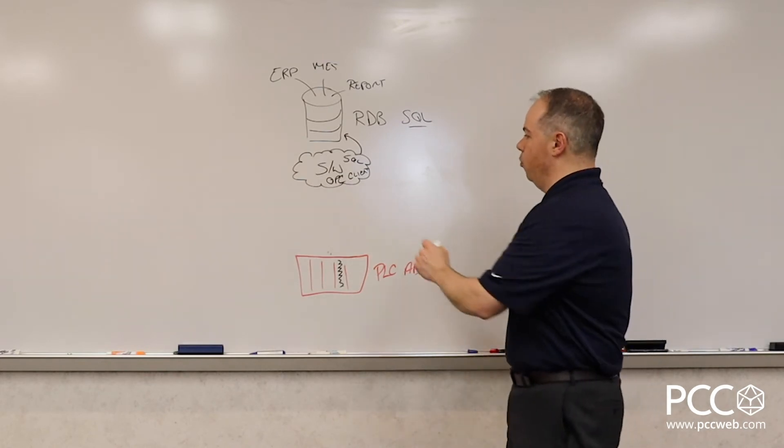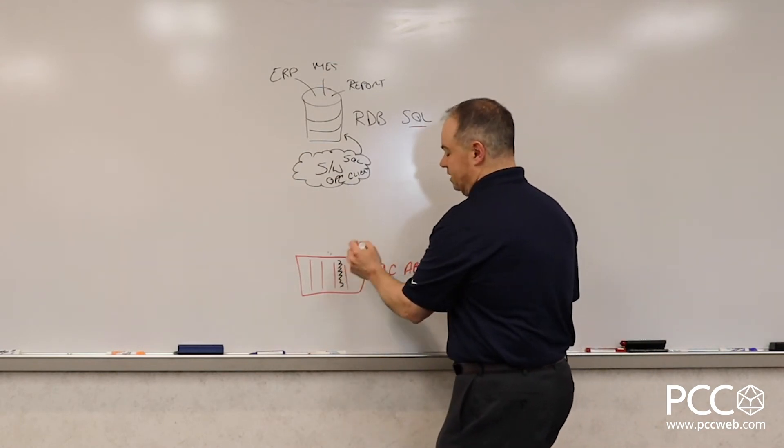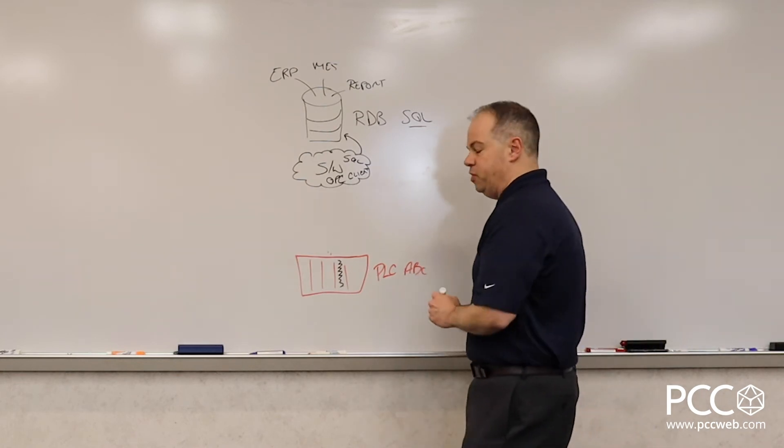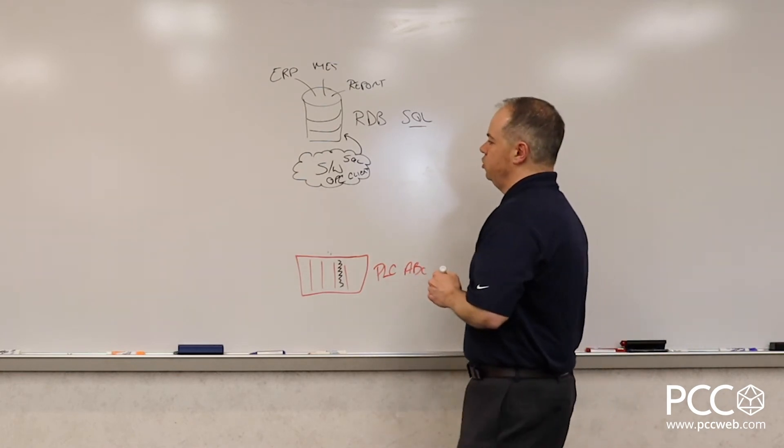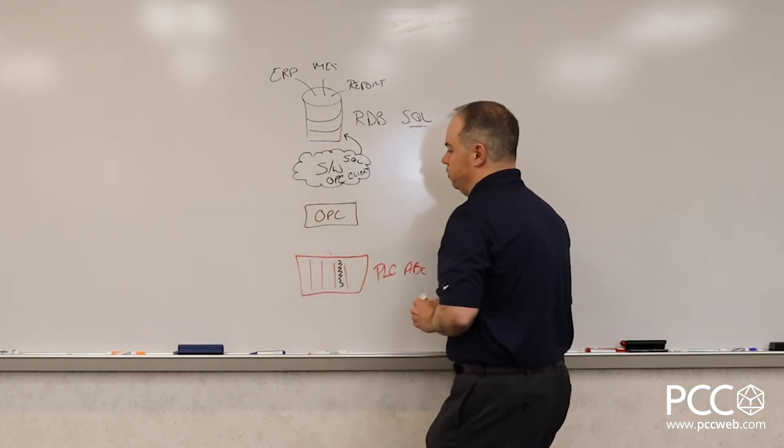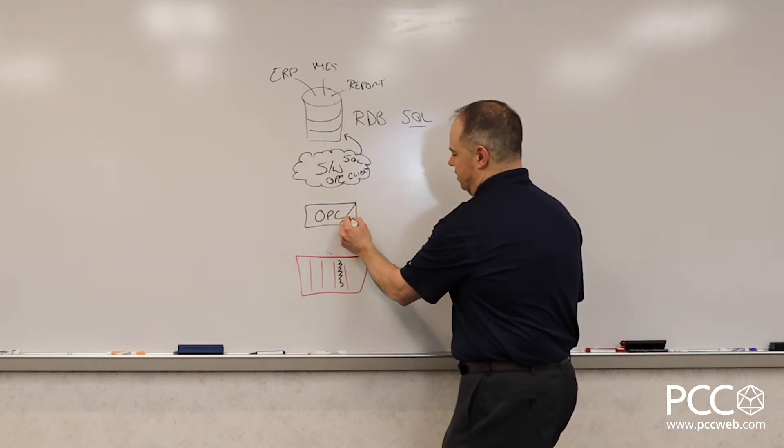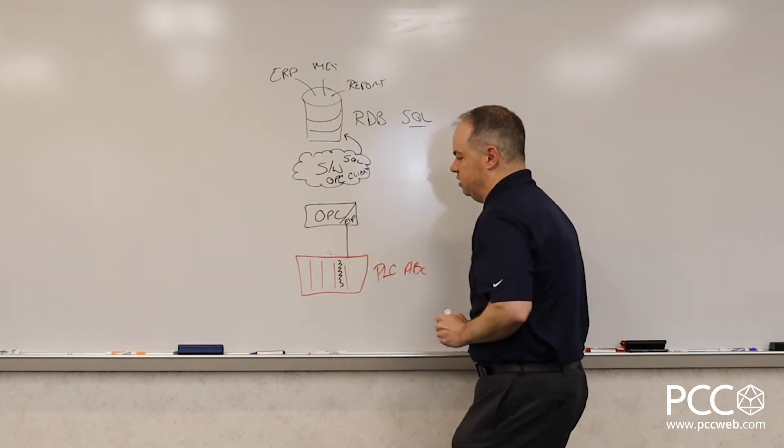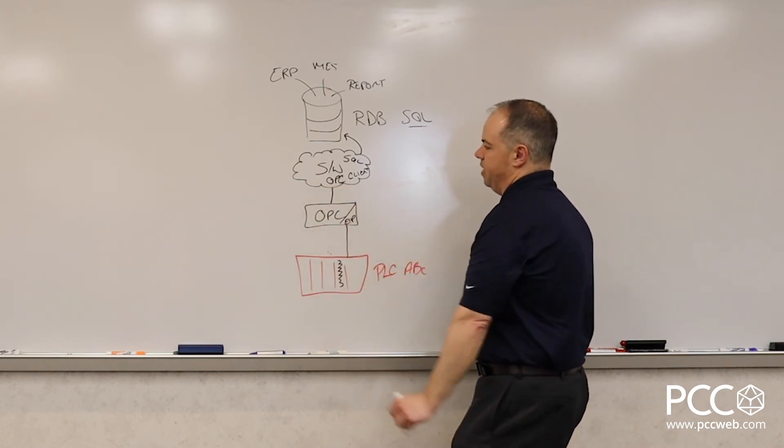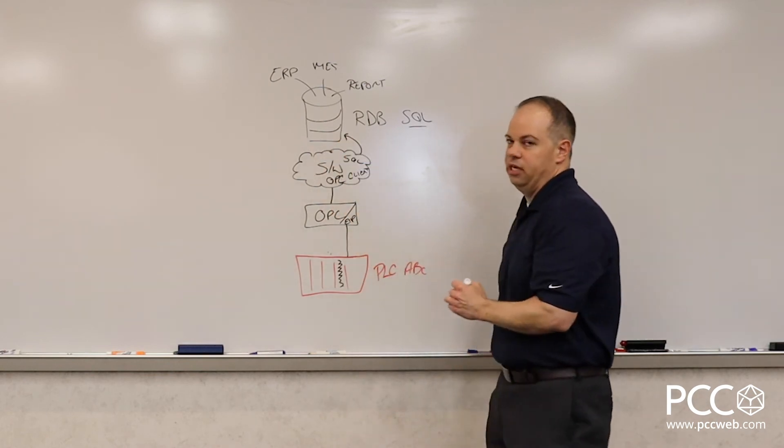That's good. OPC is an open method of communications, so that's a good thing. The trouble is again, my PLC ABC does not speak OPC by default. So now what I need to do is I need to add another piece of software in here, referred to as an OPC server. And now that OPC server has that driver to be able to speak to the PLC. It has the OPC server capabilities to serve that data up to the OPC client. And then ultimately that software can now speak to the database.